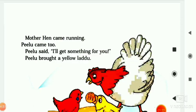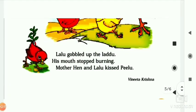Mother hen came running. Jo mother hen thi, woh bhaagte vay aayi. Pillo came too. Pillo bhi mother hen ki peeche bhaagte vay aayi. Pillo said, I will get something for you. Pillo kehta hai Lalu se, main kuch lata hoon. Pillo brought a yellow ladu and Lalu's mouth stopped burning. Mother hen and Lalu kissed Pillo.